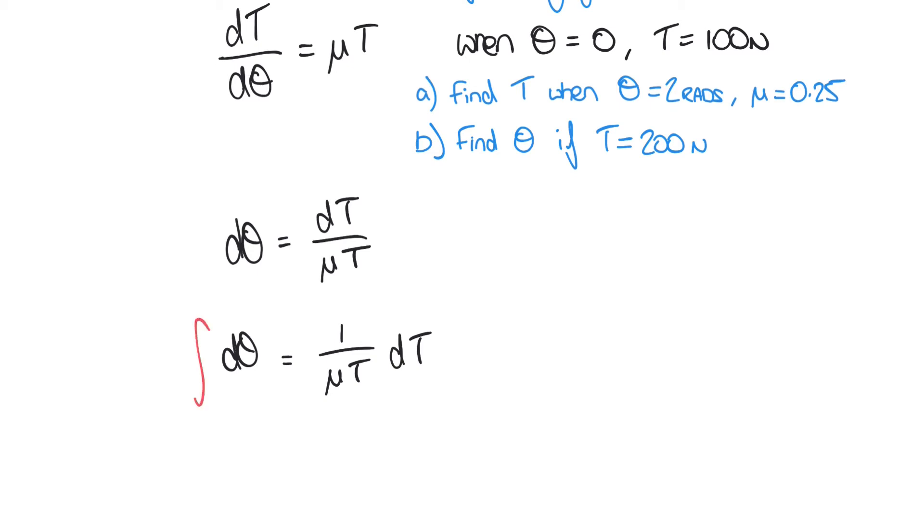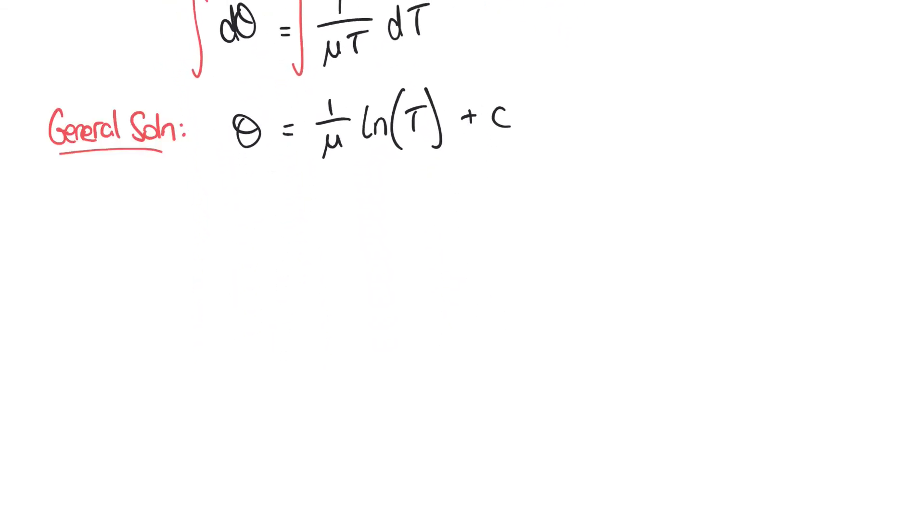So next we integrate both sides, integrating dθ or 1 dθ. We're now integrating 1 with respect to theta. And on the right-hand side, we're integrating 1 over μT with respect to T. On the left we just get theta. And on the right-hand side, when we integrate 1 over μT with respect to T, we end up with 1 over μ times the natural logarithm of T. We've discussed this particular integral identity in a previous video if you're unsure where that's come from, or you can refer to a table of standard integrals. The last thing to add on the end here is this plus c. We've performed an indefinite integral, so we'll have this unknown constant plus c on the end. So here we have our general solution, not knowing the value of that constant.